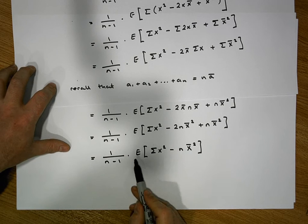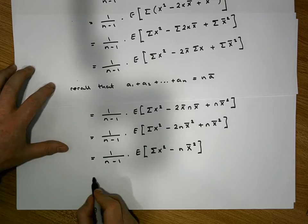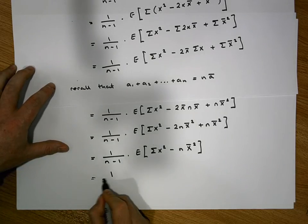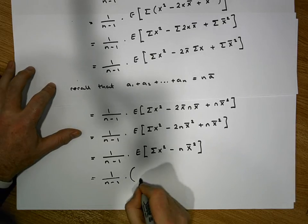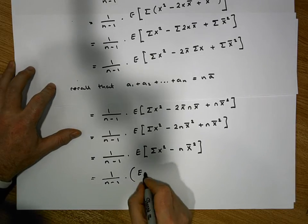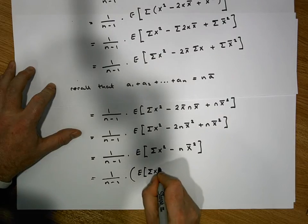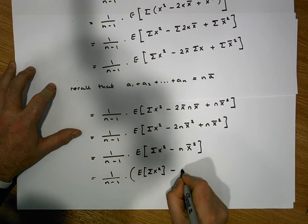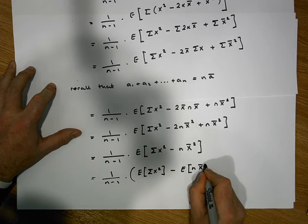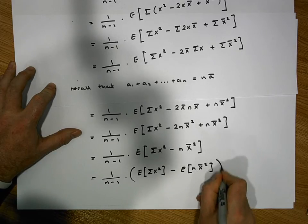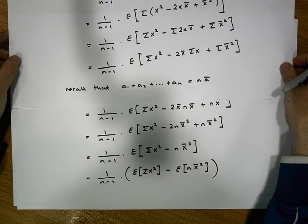Since this is a summation, we can distribute our expected value across it. This becomes 1 over n minus 1 times the expected value of the summation of x squared, minus the expected value of n times x-bar squared. We're nearly there — just some more algebra to do.